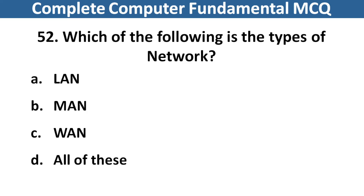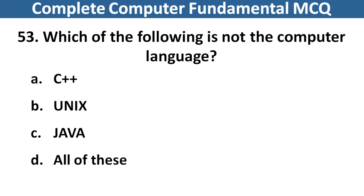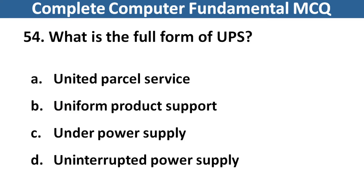Which of the following is the types of network? Right answer is option D, All of these. Next question: Which of the following is not the computer language? Right answer is option B, Unix. Next question: What is the full form of UPS? Right answer is option D, Uninterrupted Power Supply.